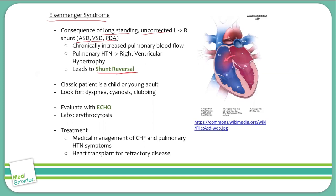Let's discuss the physiology of how this happens, because this is really important to understand. We have an example of an atrial septal defect on the right side here. As you'll recall, we have blood flowing down the pressure gradient from the left atrium to the right atrium, into the right ventricle, and then out through the pulmonary artery. Over time, this increased amount of blood flow will lead to increased pressures in the pulmonary artery, and eventually these patients will develop pulmonary hypertension.